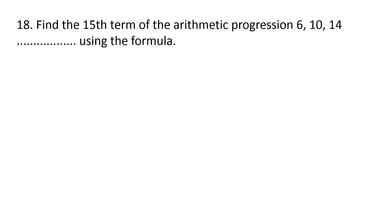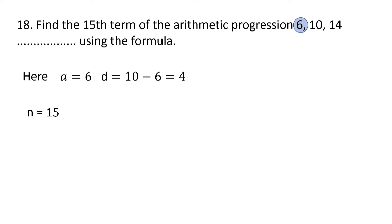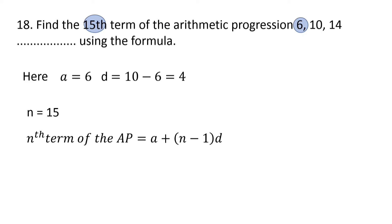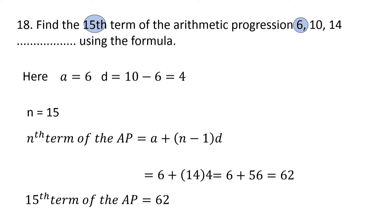The 18th question is: find the 15th term of the arithmetic progression 6, 10, 14, ... using the formula. Here the first term a is 6, and common difference d is 10 minus 6, that is 4. The formula for the nth term of an AP is a plus (n minus 1) into d. Substituting: a is 6, (n minus 1) is 14, d is 4. So 6 plus 14 into 4 is 6 plus 56, that is 62. The 15th term of the AP is 62.